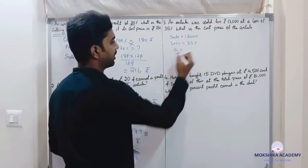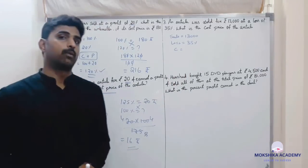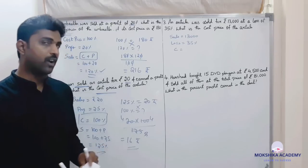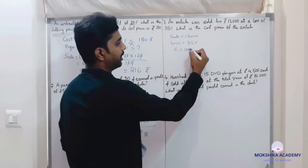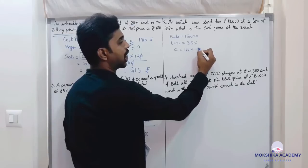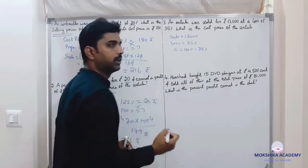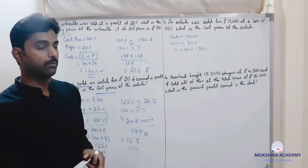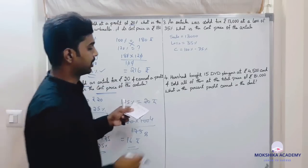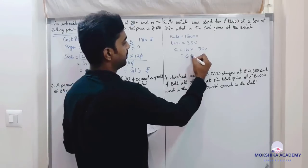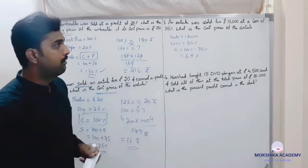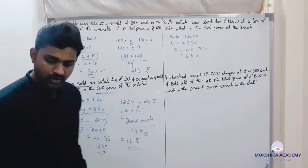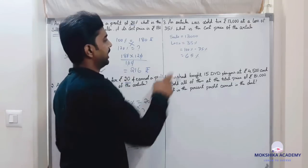We need to calculate the cost price. In this problem, cost price you know is 100 percent. Instead of 100 percent, 100 minus loss. Loss is 35 percent. 100 percent minus loss, minus 35 percent, so 35 percent is nothing but 65 percent. The article was sold for 13,000, so this is not cost, this is actually the sales.